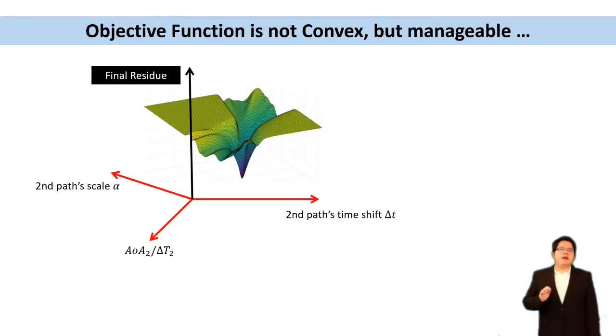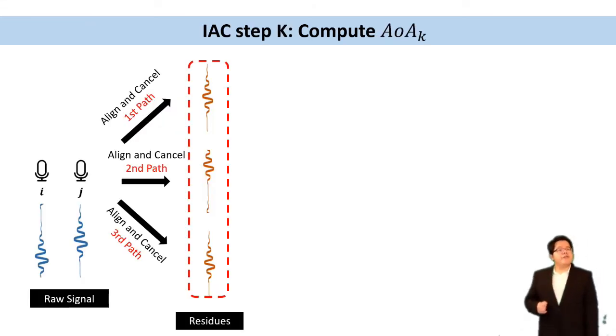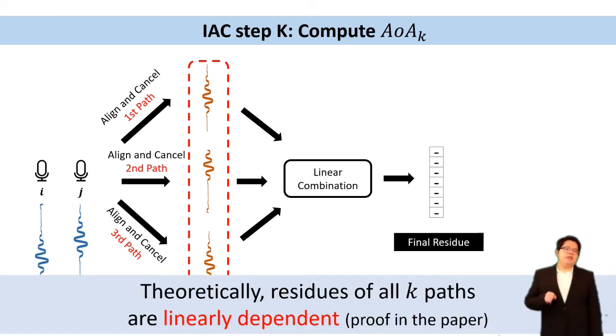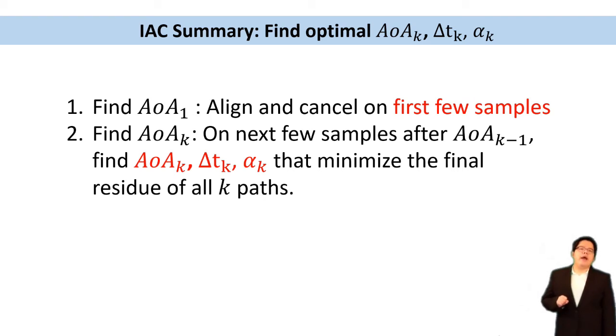The objective function is not convex, but quite manageable for the second pass. But what happens if k is larger than 2, like the third, the fourth, and the kth incoming path? For the next k path, we can find the kth residual vector similarly. And all the residual vectors will still be linearly dependent. So theoretically, IAC iterative align and cancel can find arbitrary number of passes. These slides conclude the core algorithm, the core IAC.